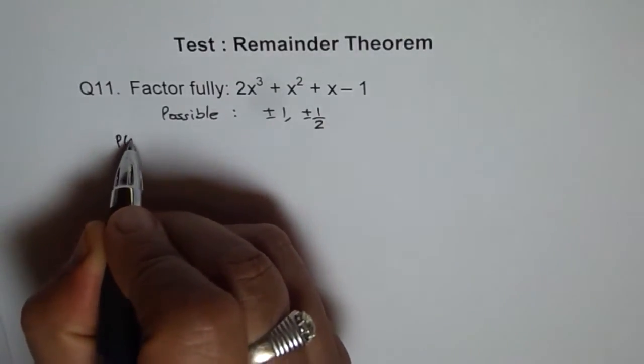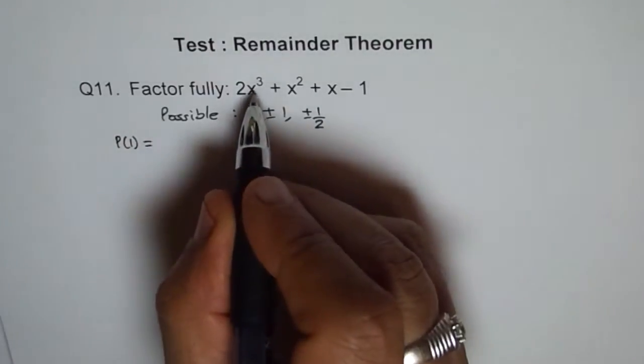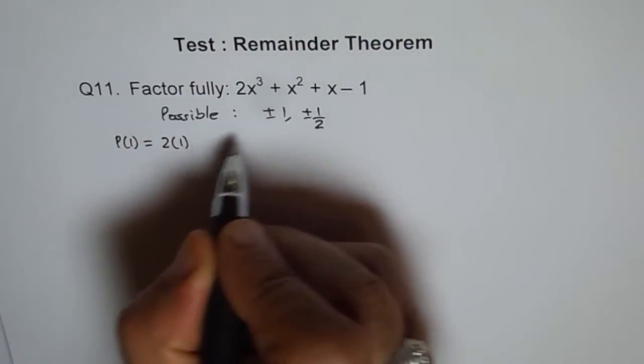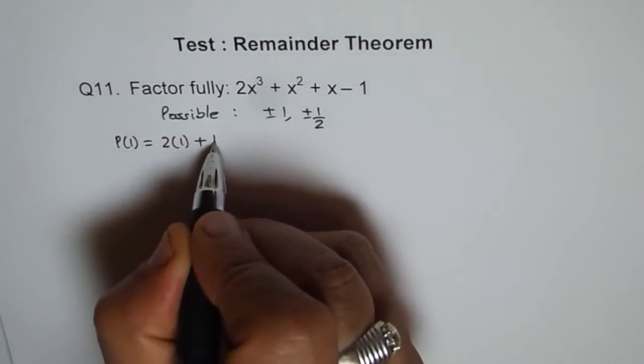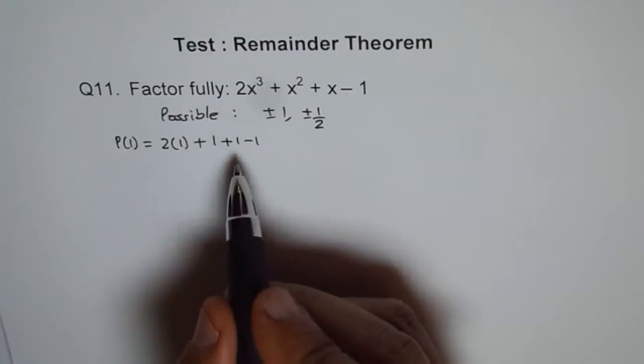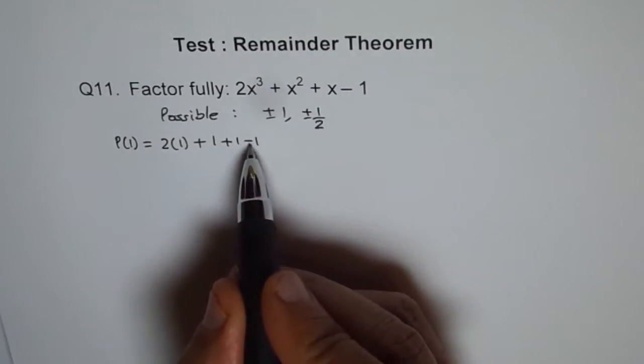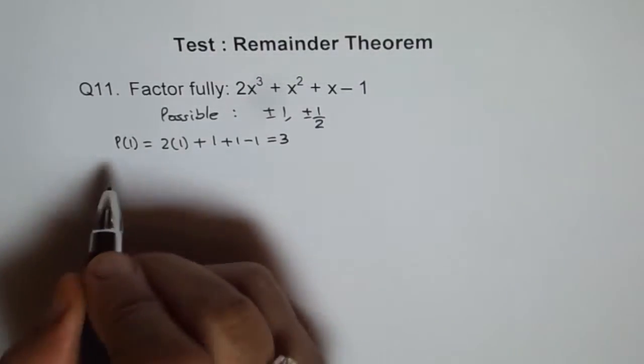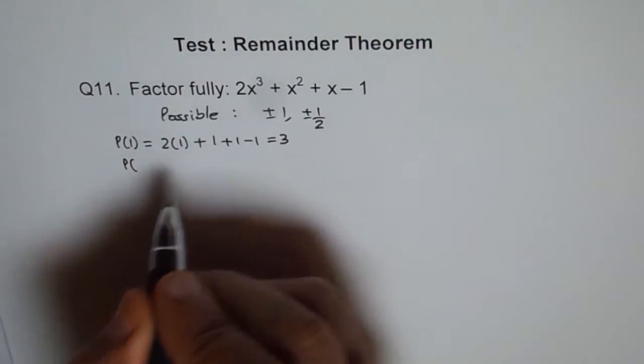So P(1) equals, when you plug in 1, we get 2(1)³ + 1² + 1 - 1. This is not 0. Plus 1 minus 1 is 0, but then you get 2 + 1 as 3, not 0. Let me write 3 here. Let's try the next value.